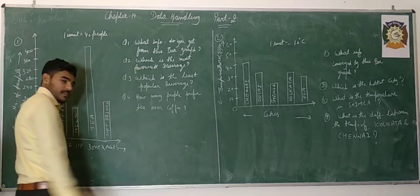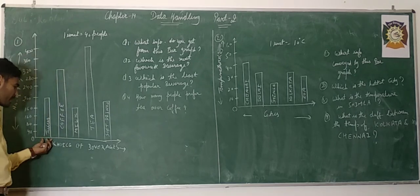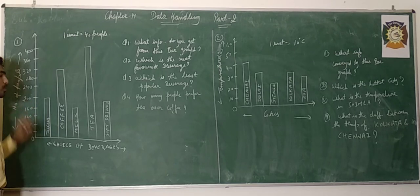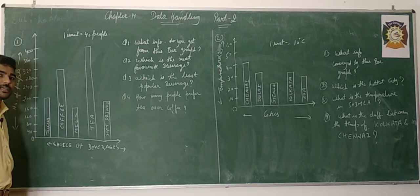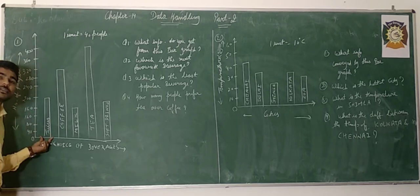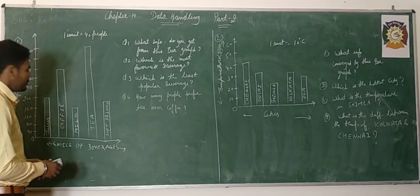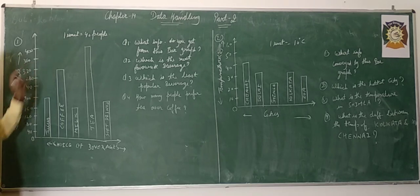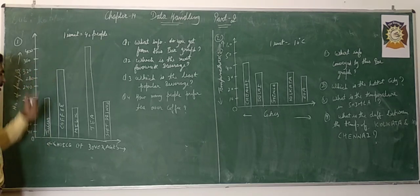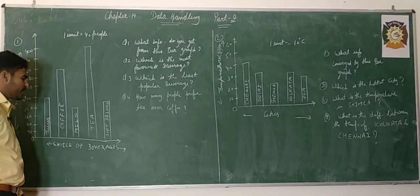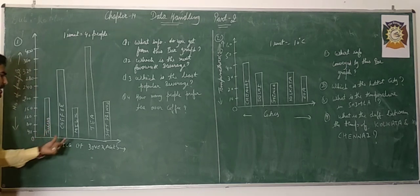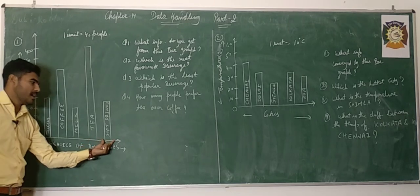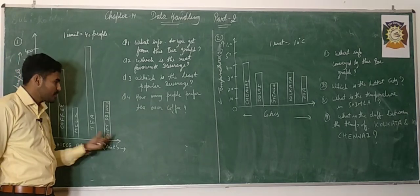For example, if we talk about juice, juice is liked by 200 people — it means 200 people liked the juice. If we talk about coffee, that is 320 — 320 people liked coffee. In the same way, you can find how many people like milk, how many people like tea, and how many people like soft drinks.